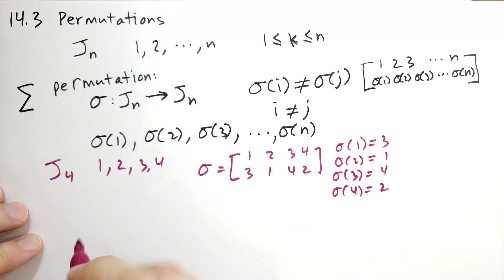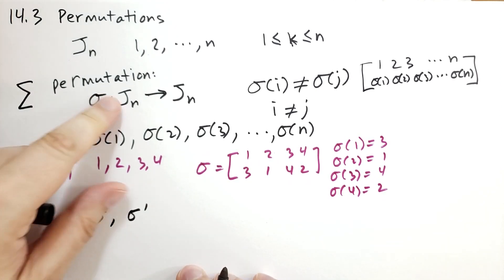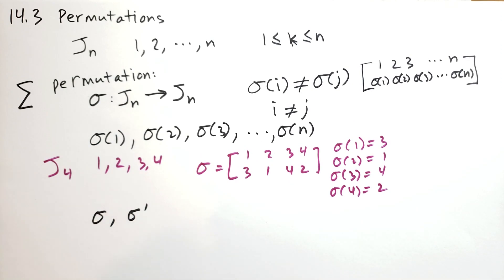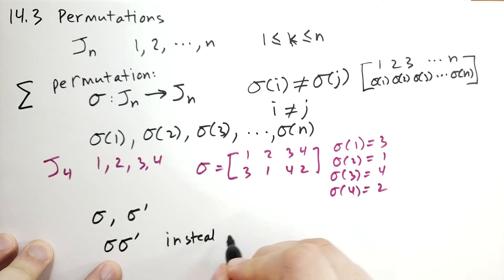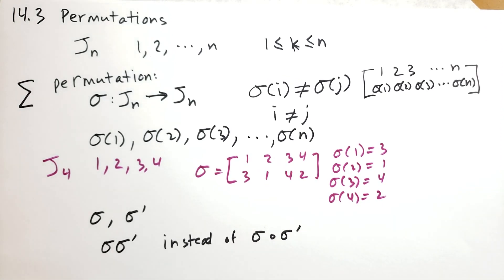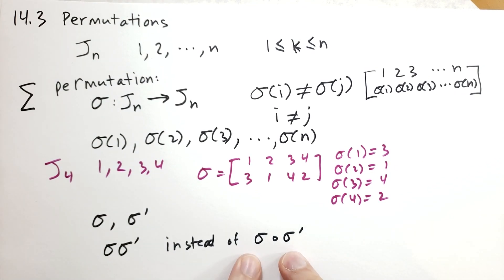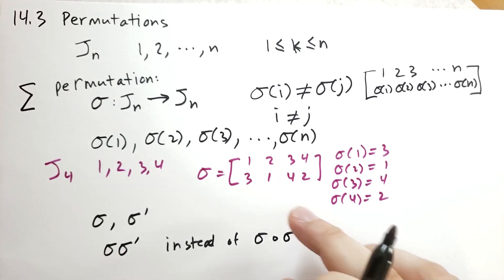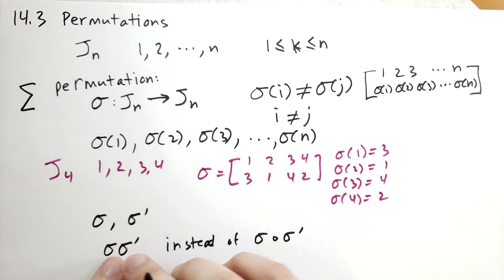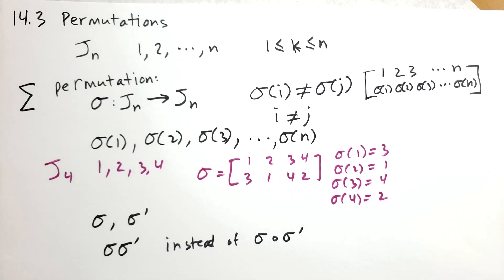If we have two permutations, sigma and sigma prime, which are two permutations using the same J_N, we can call the composite sigma sigma-prime instead of using the circle notation. We're going to think of composition here as multiplication, but this is not sigma times sigma — it's not like if sigma maps 1 to 3 and sigma prime maps 1 to 4, you'd get 3 times 4. It's just mapping through themselves.